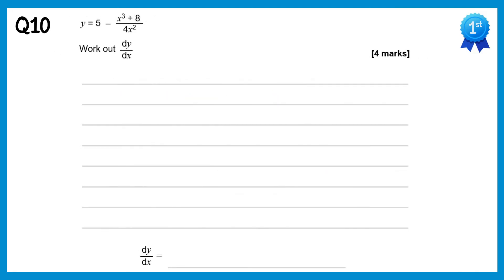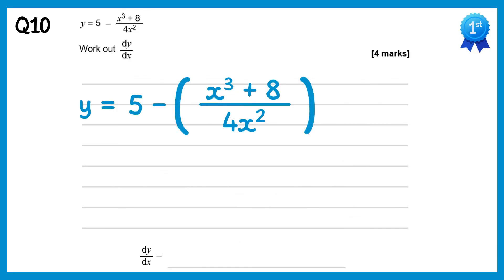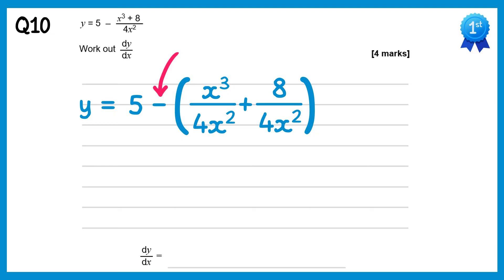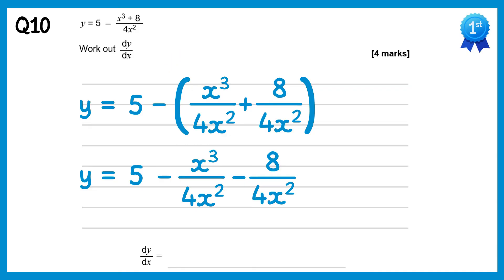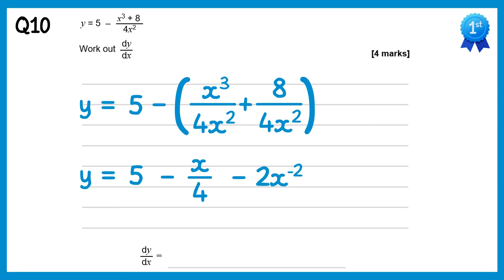For this final question we need to do some manipulation first. The negative here will affect both fractions when we expand — it's like multiplying by negative 1. So we get y equals 5 take away x cubed over 4x squared, then also take away 8 over 4x squared. A common mistake is to put a plus. Simplifying: x cubed over x squared is just x, so we have x over 4; and 8 over 4 simplifies to 2, using the negative index law giving 2x to the negative 2. Differentiating: the constant 5 goes to 0; the negative one quarter x loses the x giving negative one quarter; and for the final term negative 2 times negative 2 is positive 4, with the power going from negative 2 down to negative 3.